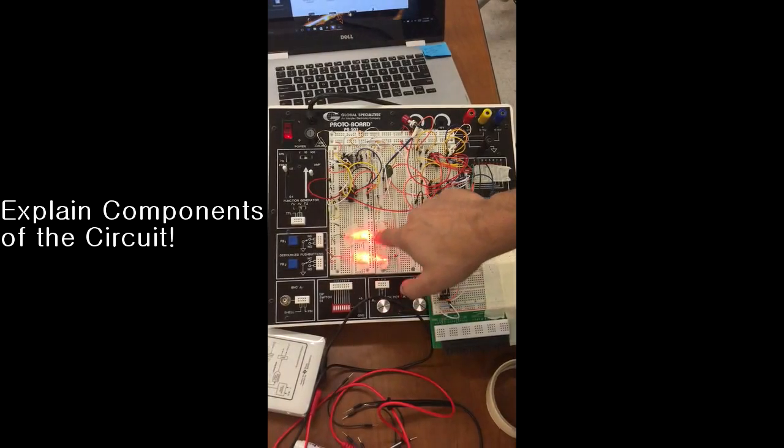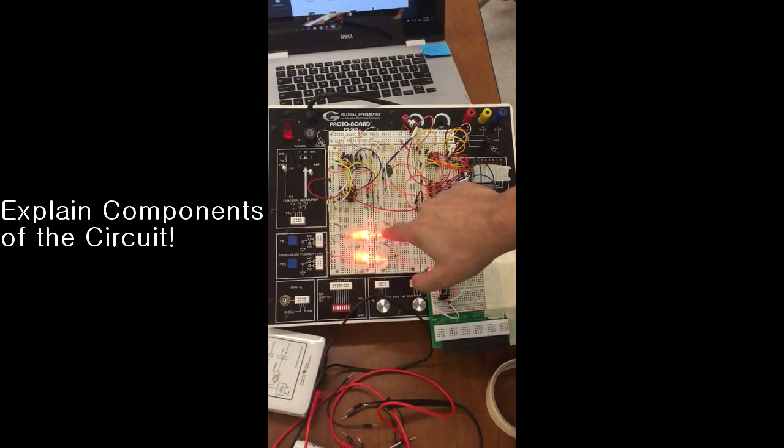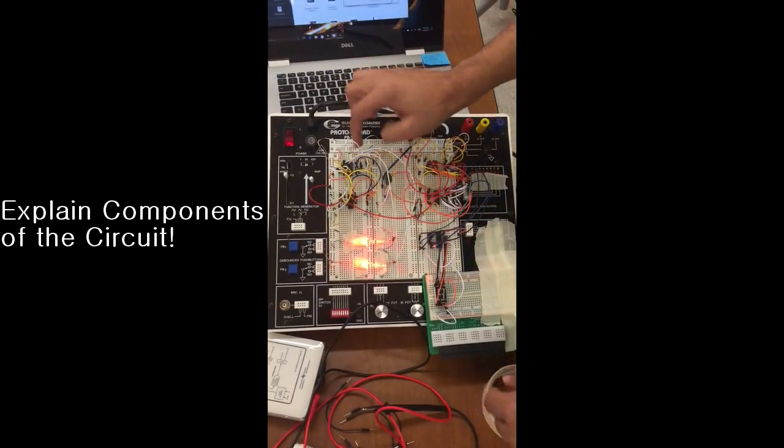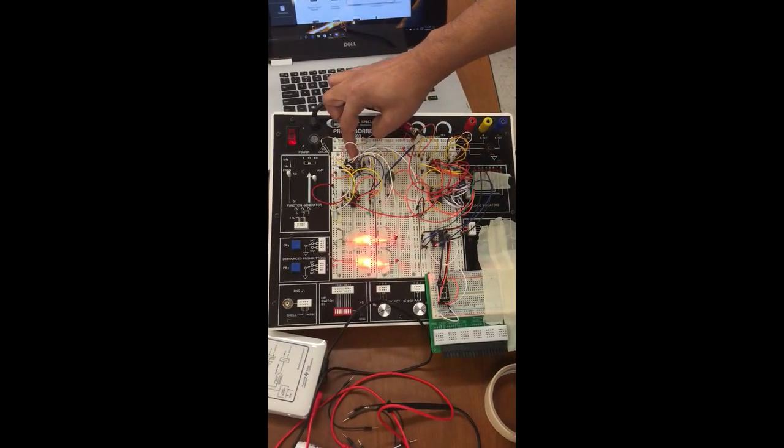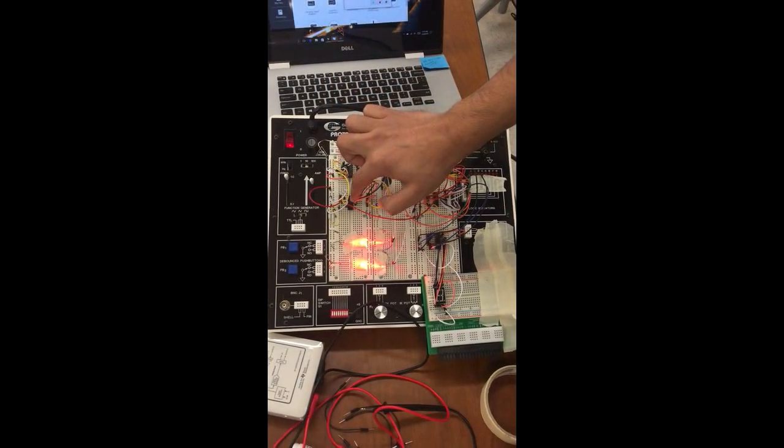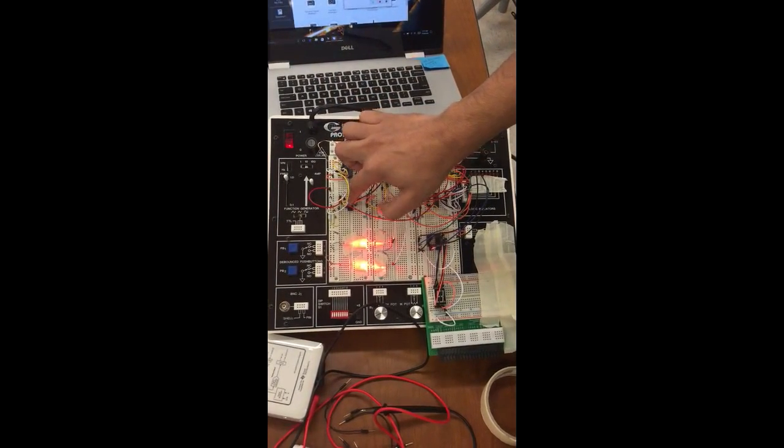These are two LEDs and phototransistors. These phototransistors are connected to supply through 51k resistors. Here is a NAND gate chip, 7400LS, and this is a D flip-flop which is 74LS74.